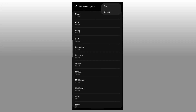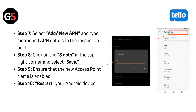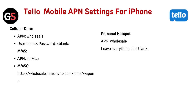Step 7: Select Add or New APN, and type the mentioned APN details into the respective fields. Step 8: Click on the three-dot menu in the top right corner and select Save. Step 9: Ensure that the new access point name is enabled. Step 10: Restart your Android device.